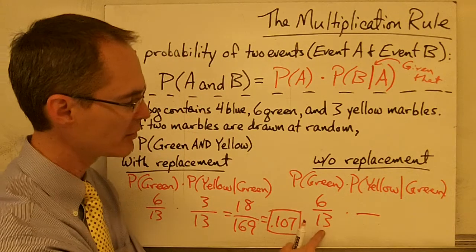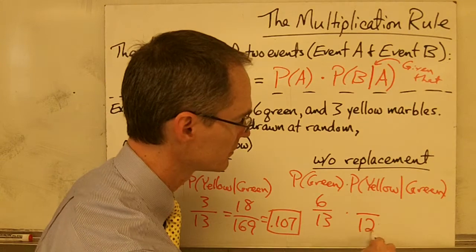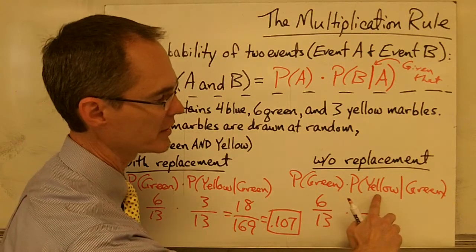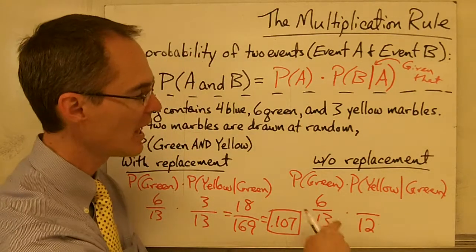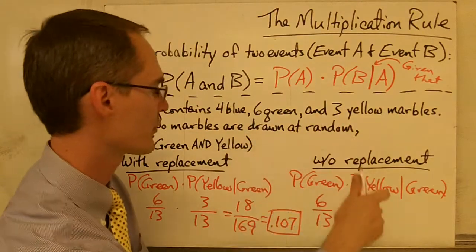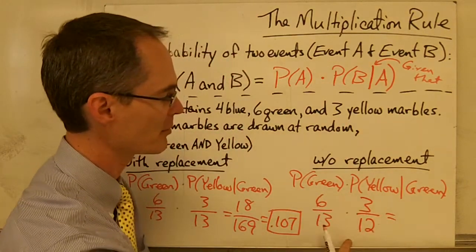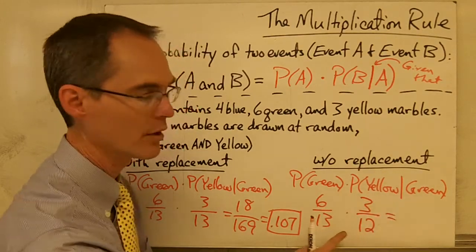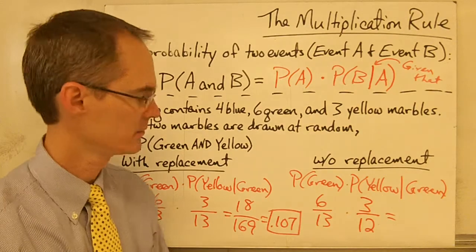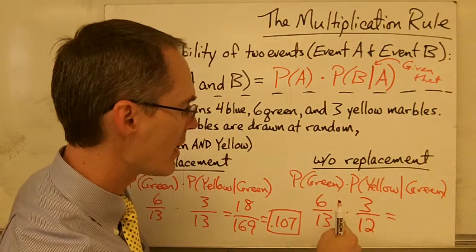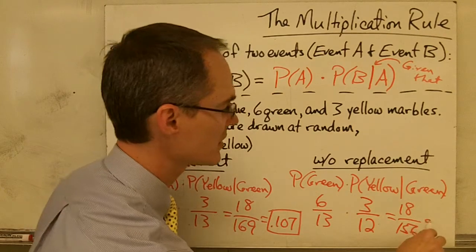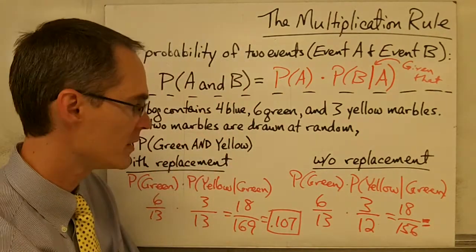Now things are different because I no longer have 13 marbles in the bag — I only have 12 marbles. The probability of drawing a green marble first is still 6/13, since the bag starts with 13 marbles and six are green. But now the probability of drawing a yellow marble given that I've already drawn a green marble is 3/12, because there are still three yellow marbles but only 12 marbles remain. Multiplying these gives 18/156, which equals approximately 0.115.